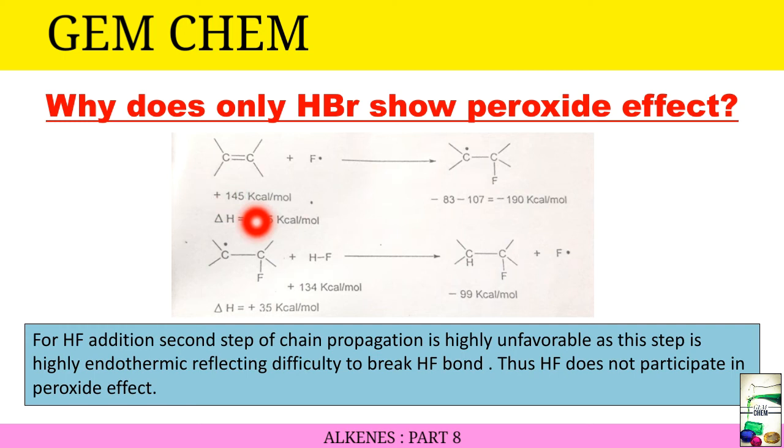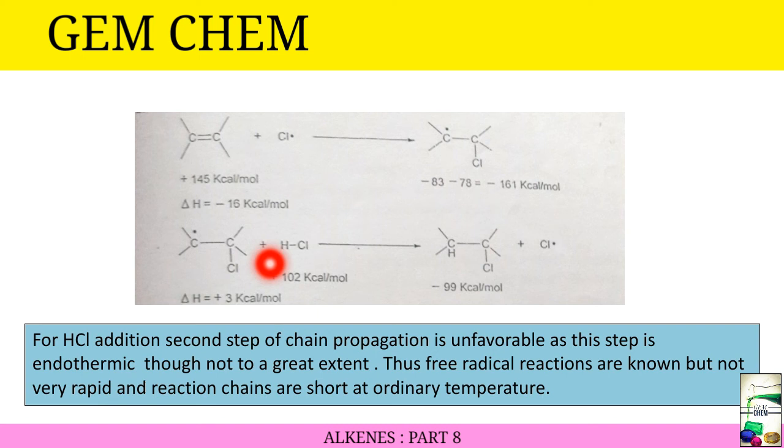First, we consider HF. In this case, the first step is exothermic whereas the second step has delta H positive, that is endothermic. For HF addition, the second step of chain propagation is highly unfavorable as it is highly endothermic, reflecting that it is difficult to break the HF bond. Thus HF does not participate in peroxide effect as the HF bond is difficult to be broken. In the second case, for HCl addition, we see that this step is exothermic whereas this step is a little endothermic.